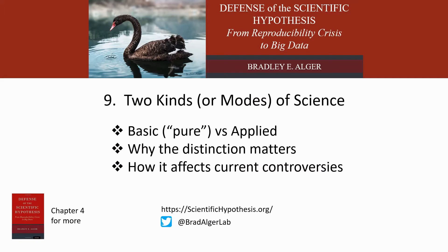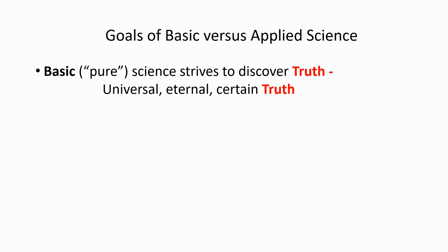So what about these two kinds or modes of science? We'll look at the different objectives or goals of basic and applied science, and we'll discuss why the distinction matters for our understanding of science, as well as how it affects current controversies at a societal level. What are the goals of basic and applied science? Basic science strives to discover truth — big T truth — universal and certain.